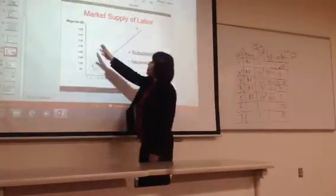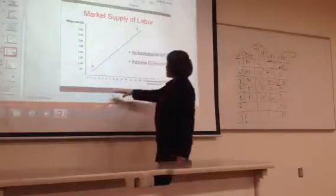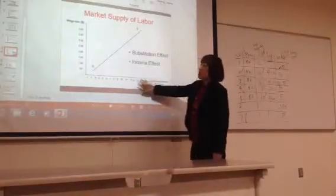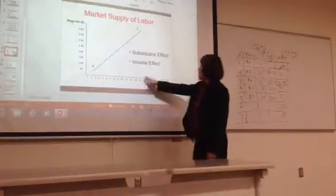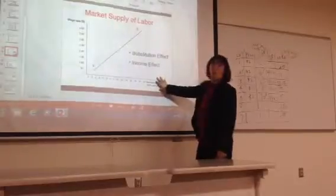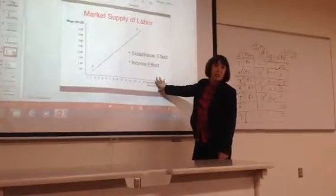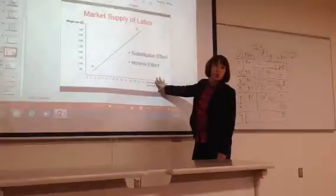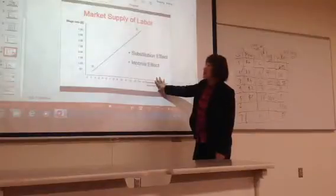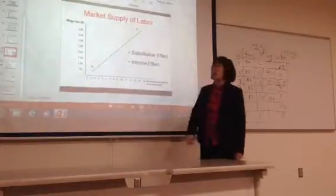The price of labor goes on the vertical axis and the quantity goes on the bottom. But the quantity in this case is our work hours, amount of work hours we do as an employee. That's the quantity of hours.